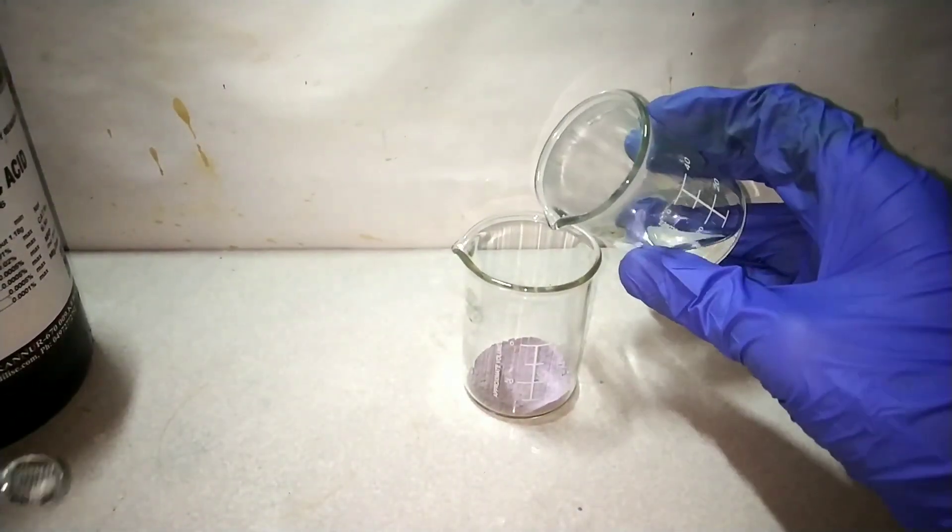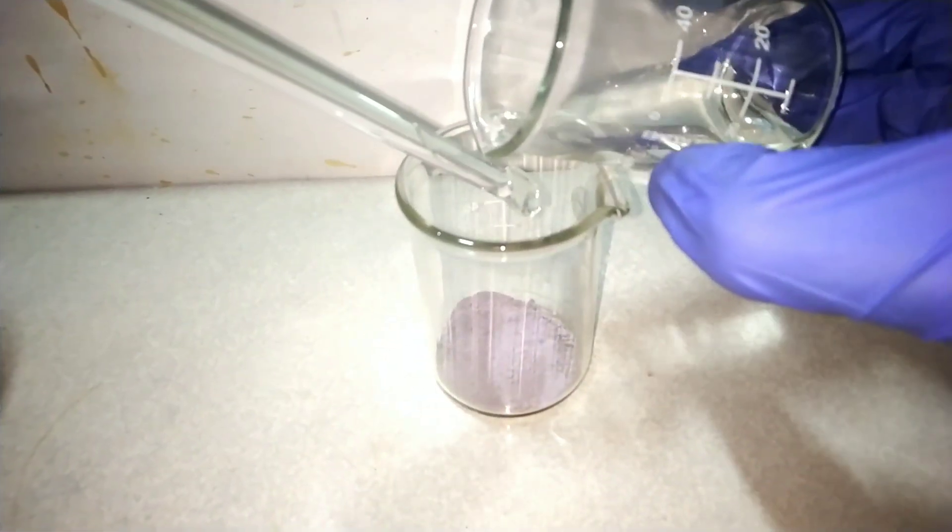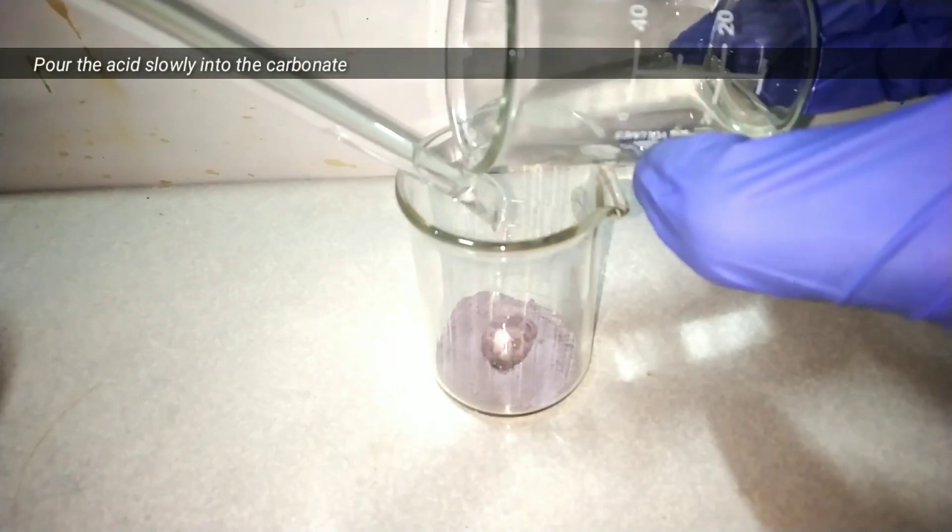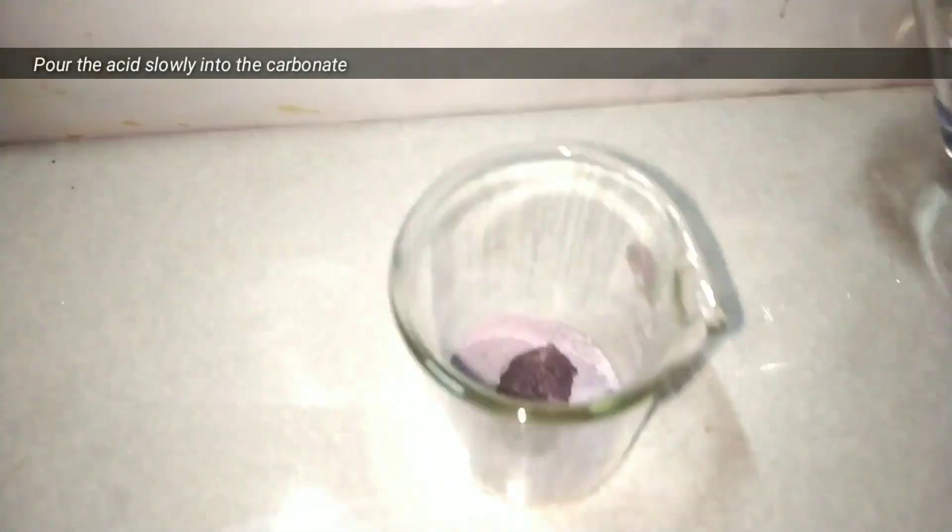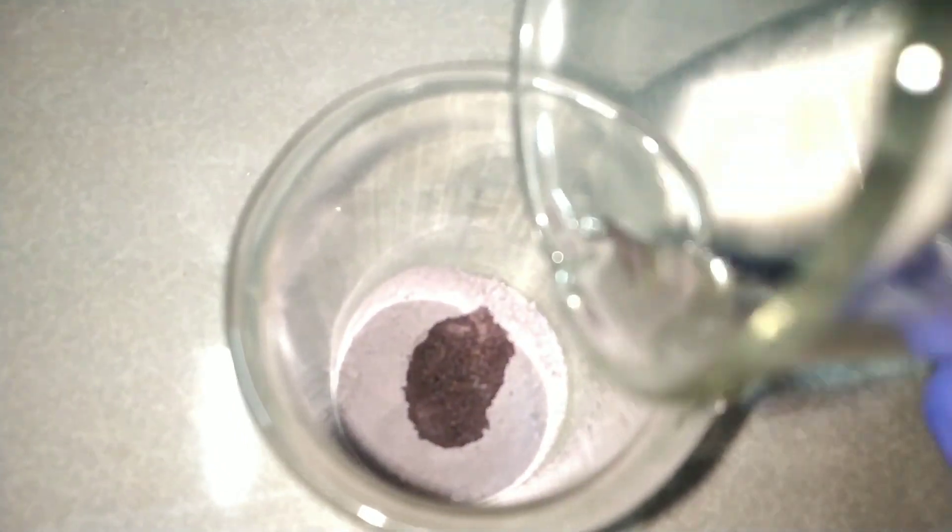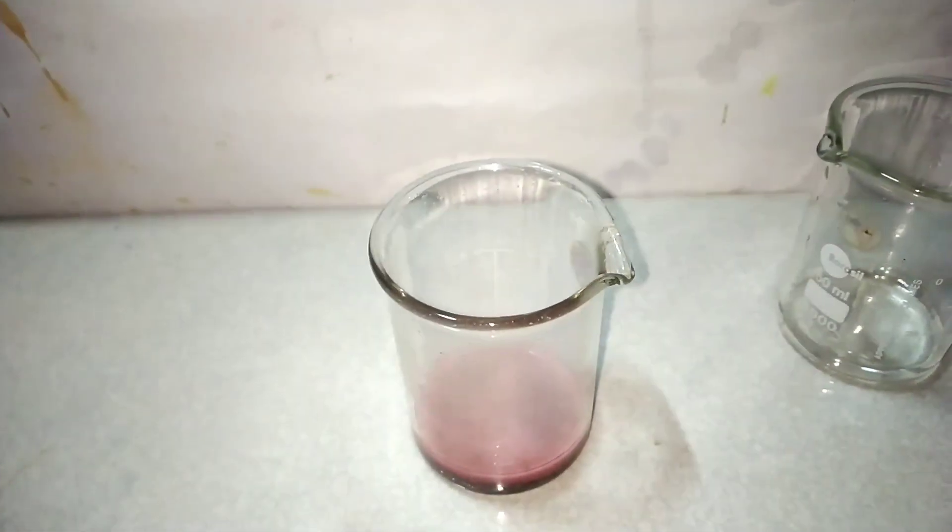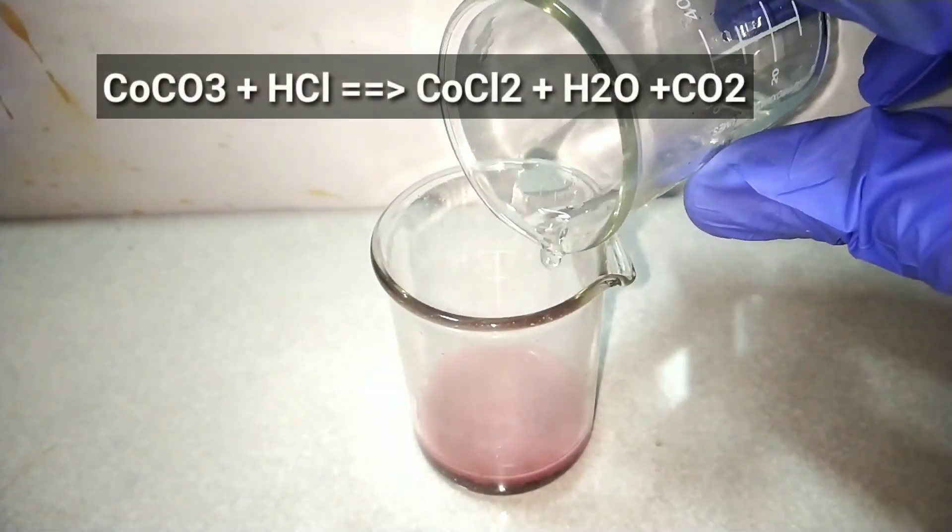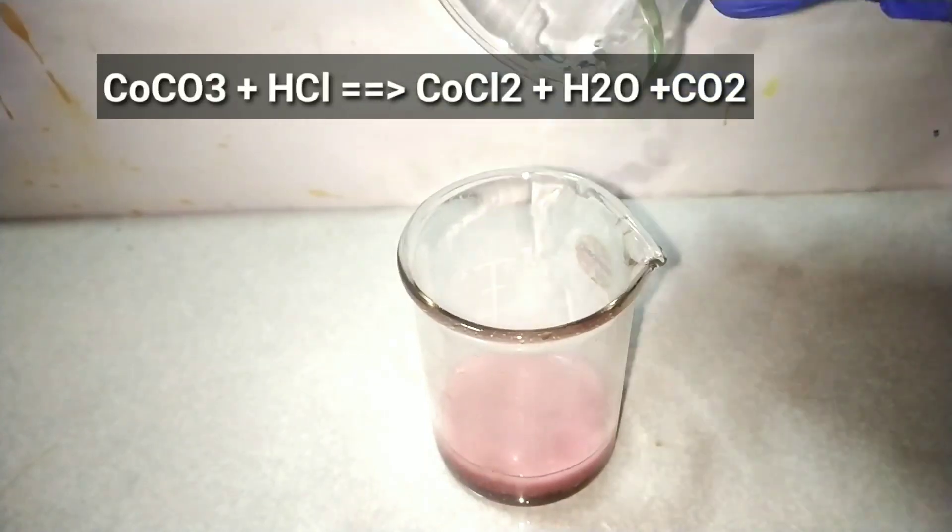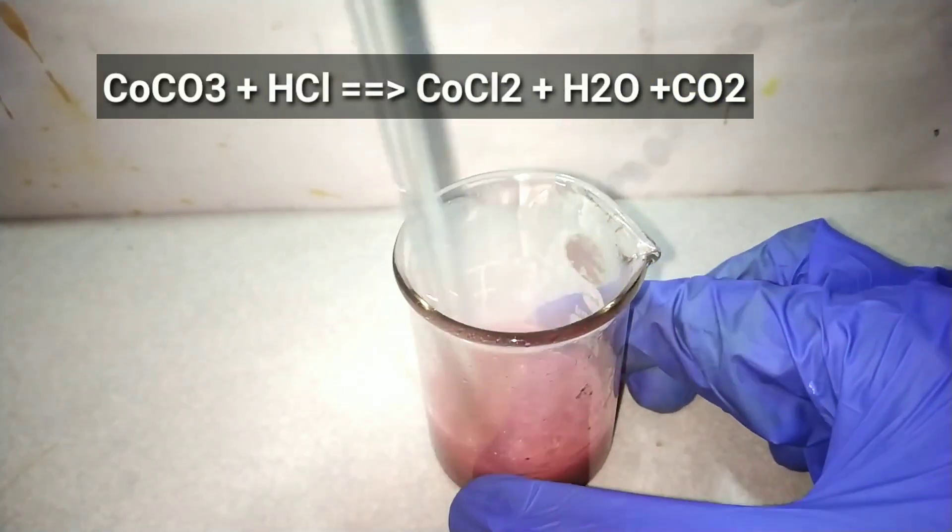Now this is what we are going to add into the cobalt carbonate. Add the acid into the beaker with the aid of a glass stirrer to direct the stream. You can immediately observe an effervescence and the solution slowly turns purple color, similar to the concentrated potassium permanganate solution.